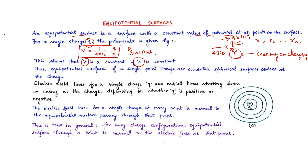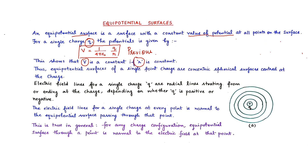V is inversely proportional to the distance, so as distance increases, potential keeps decreasing. As we can see in this diagram, with R1, R2, R3, R4 and corresponding potentials V1, V2, V3, V4 — the trend followed is V1 greater than V2 greater than V3 greater than V4, because R1 is smaller than R2 is smaller than R3 is smaller than R4.